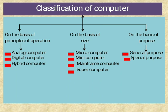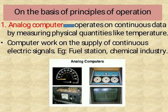Classification of Computer. Computers are classified into three types: on the basis of Principles of Operation, on the basis of Size, and on the basis of Purpose. On the basis of Principles of Operation, there are Analogous Computer, Digital Computer, and Hybrid Computer. The Analogous Computer operates on continuous data by measuring physical quantities like temperature. The computer works on a supply of continuous electric signal. For example, fuel stations and chemical industry. This is the picture for Analogous Computer.